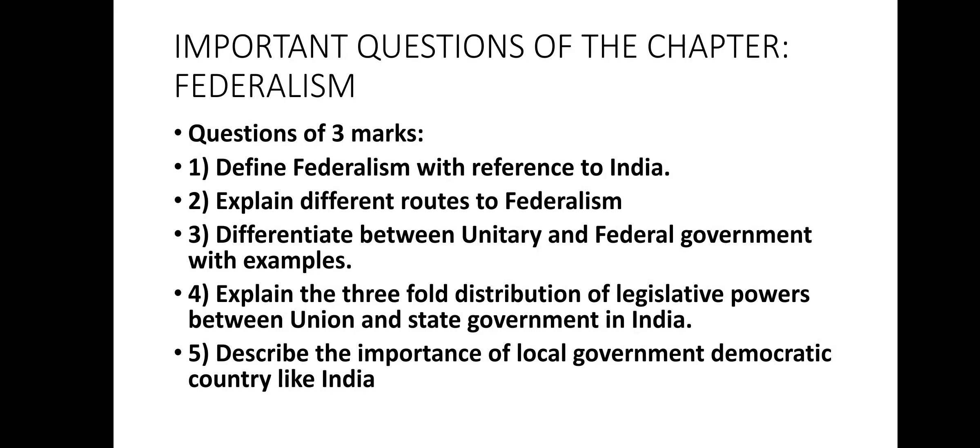We have been going through five objective-type questions daily in our classes. Today I would like to discuss the important three-mark and five-mark questions. For three marks, first: define federalism with the example of India or Belgium. Second: explain why India is considered a federal country. Third: explain the different routes to federalism — holding together and coming together federations.